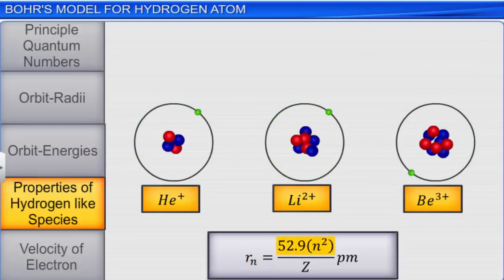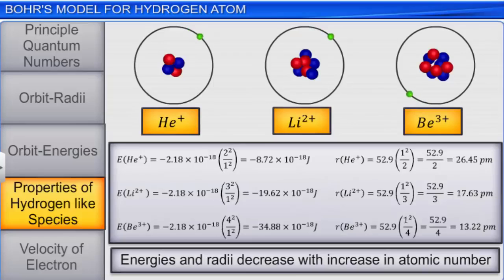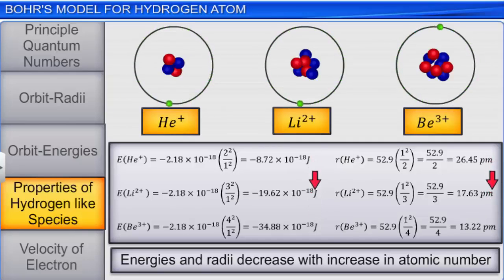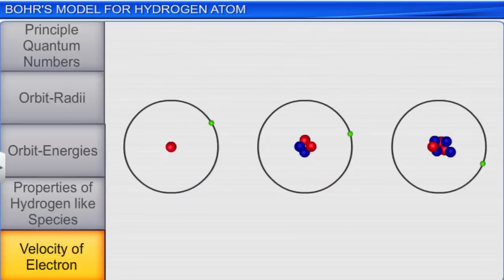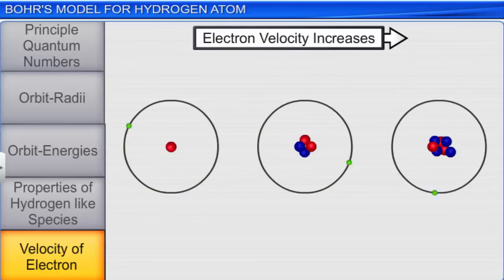From the orbit energies and radii equations of hydrogen-like ions, it can be deduced that with increase in Z, the value of energy becomes more negative and the radius becomes smaller. Bohr's theory also states that the magnitude of velocity of electron increases with increase of positive charge on the nucleus, that is, increase of atomic number, and decreases with increase of principal quantum number.